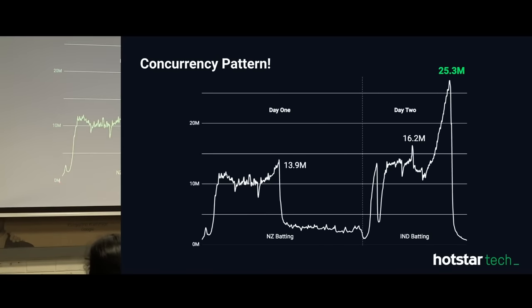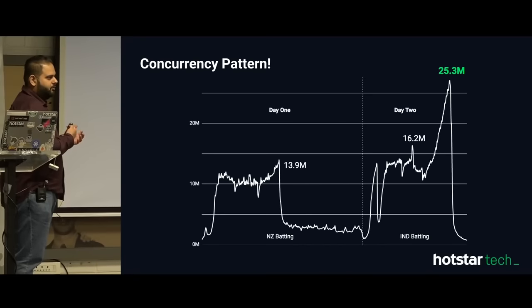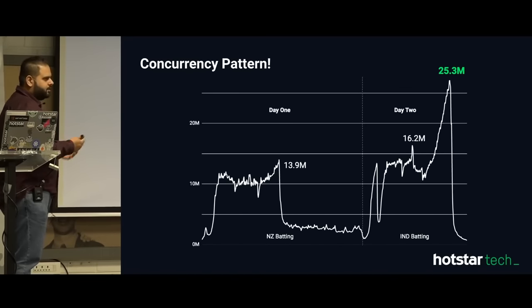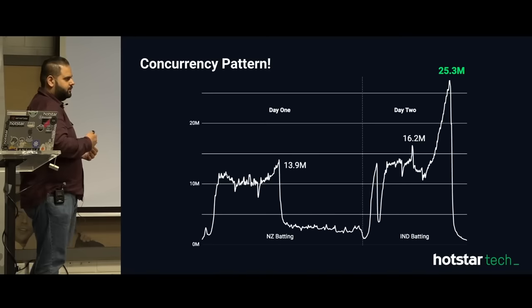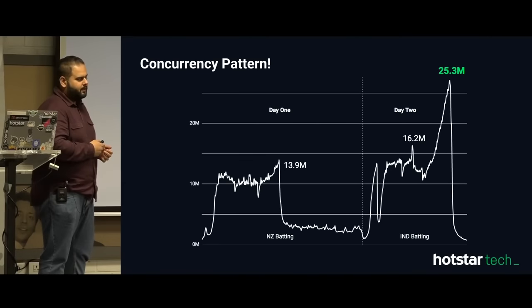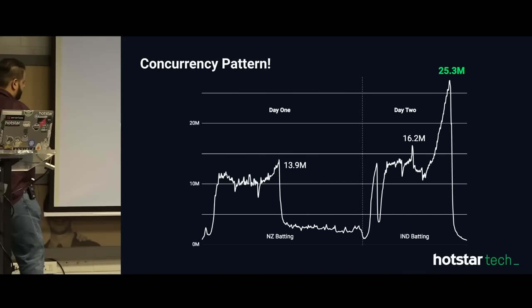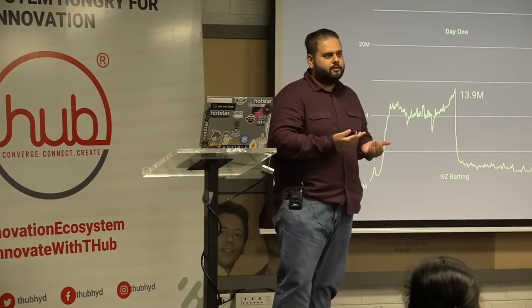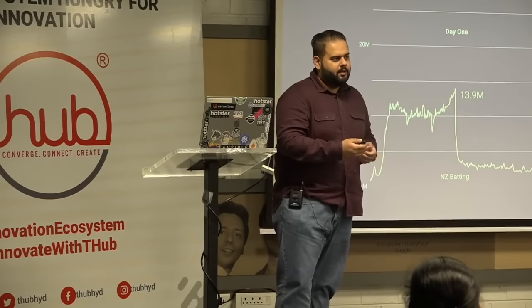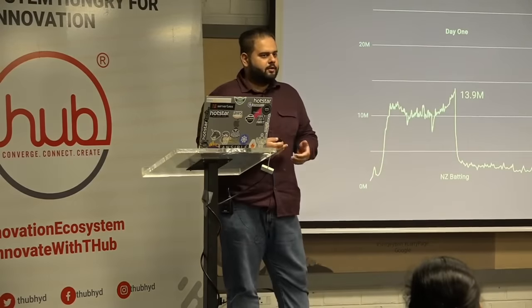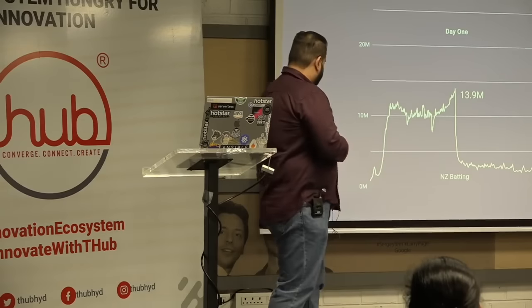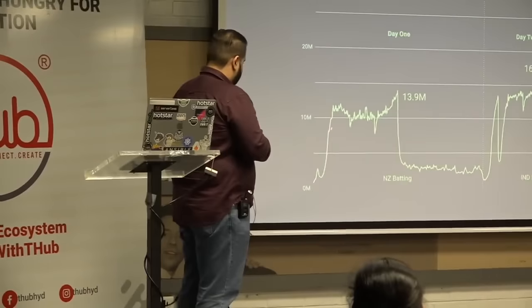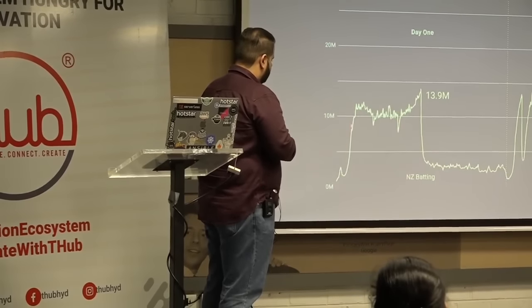This is the toss — this is the entire cricket journey. This was a 3pm match since it was happening in the UK, and the toss used to happen around 2:30. The first small spike is the toss, with around 3-4 million people coming at that time. Then there is a half-hour break, and the match started at 3. The first big spike is the start of the game.